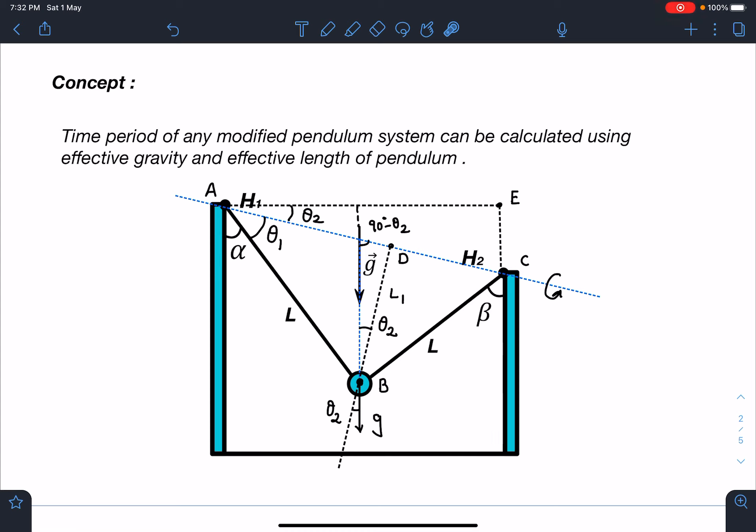So if you see this diagram carefully here, this is the axis about which this pendulum is going to oscillate. And if you see here, when we slightly disturb it, this will be acting as the effective length of the pendulum because if you write torque about this axis, Mg will be the only force which will be providing torque. Tension T1, T2, they will provide zero torque about the axis.